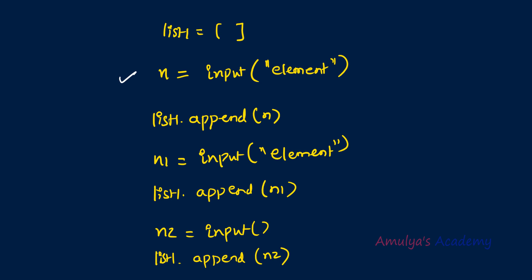You are repeating the same lines again and again. If I want to insert 10 elements into list1, I need to repeat those two lines 10 times. The program becomes longer and doesn't look good. Instead of repeating the code, we can use a loop. Whenever you need to repeat a piece of code for different values, you can use a loop. We have two loops — the for loop and the while loop.